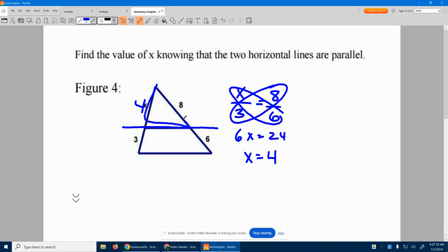Now normally we set up a small triangle similar to the large triangle and then set up the proportion, but we don't have to do that here, which makes it so much easier.